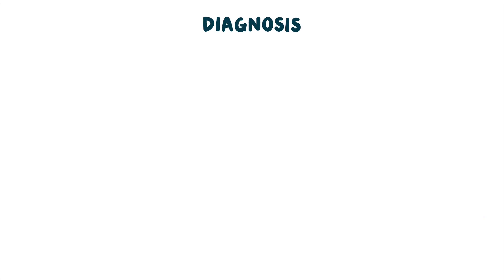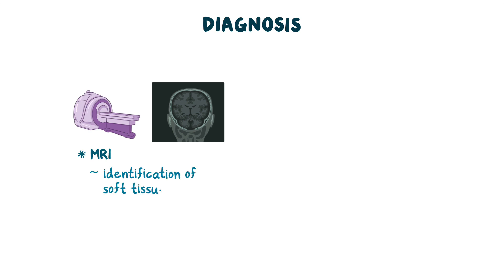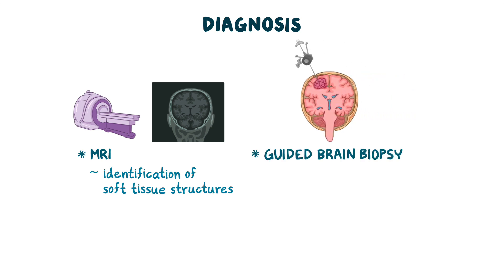Generally, the diagnosis of glioblastomas involves imaging techniques like an MRI of the brain, which allows better identification of soft tissue structures like tumors. Definitive diagnosis is made based on a tissue biopsy obtained through surgical removal of the tumor or a guided brain biopsy. Tissue biopsy helps identify the unique molecular markers of each tumor and can help decide the most effective treatment.